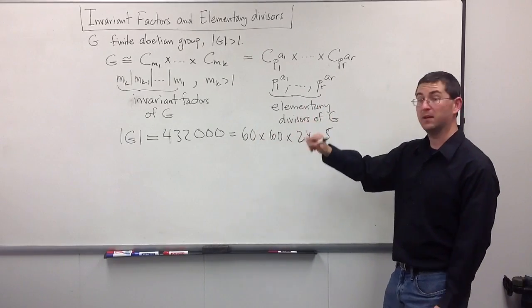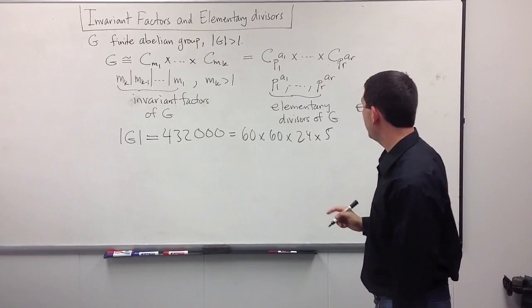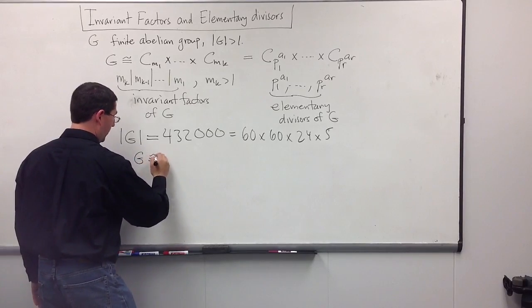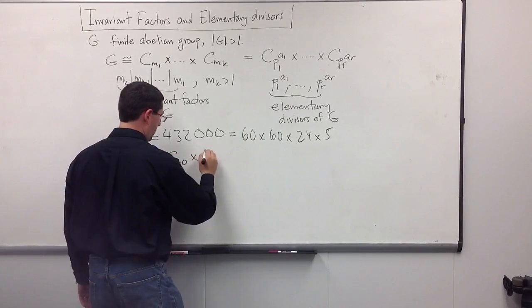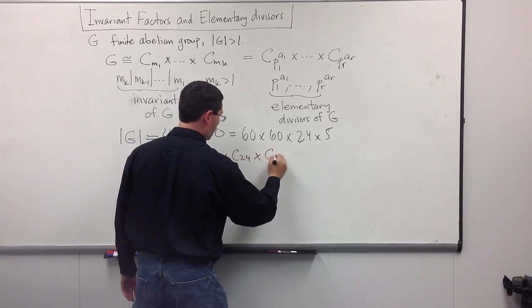60 seconds in a minute, 60 minutes in an hour, 24 hours in a day, and there's your five days. Alright? And maybe we know, in fact, that G is isomorphic to C60 cross C60 cross C24 cross C5.